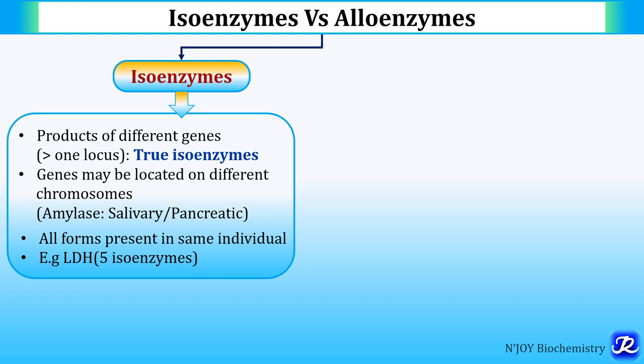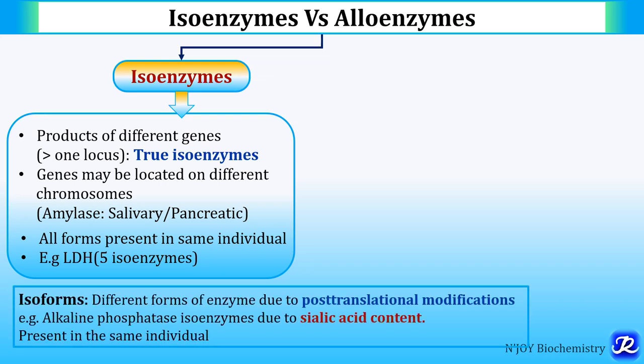LDH has 5 isoenzymes, LDH1 to LDH5, and they are present in different tissues, but all 5 isoenzymes are present in the same individual. There is one more term — isoforms.